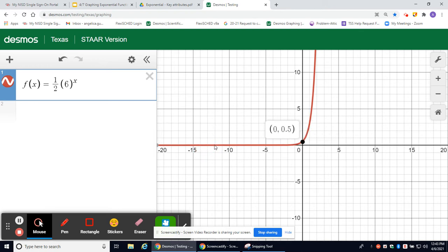Your asymptote is always going to be the x-axis where y = 0. It's never going to cross, and your y-intercept is at 0.5, which is 1/2. It is exponential growth because it's increasing from left to right.